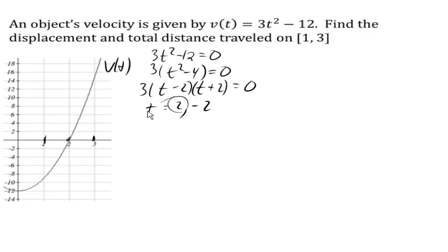To find the total distance traveled, we separately find how far we move in each direction. We integrate from 1 to 2 of the velocity function, and then separately integrate from 2 to 3 of the velocity function.